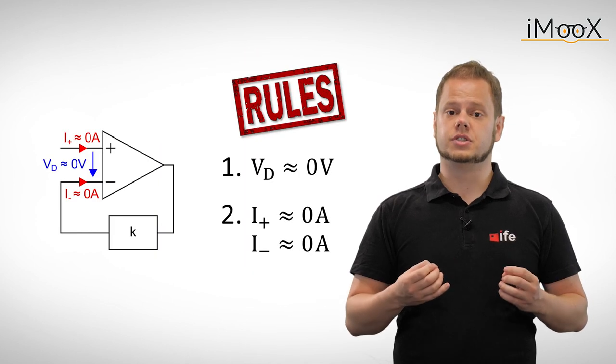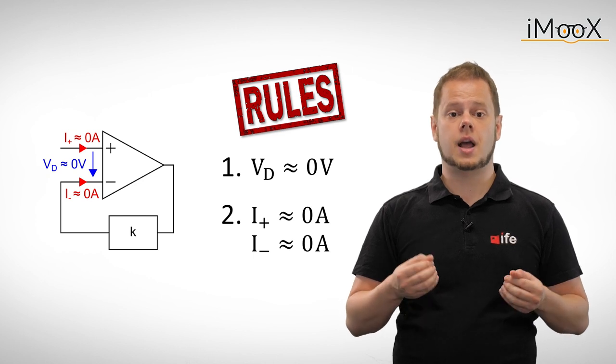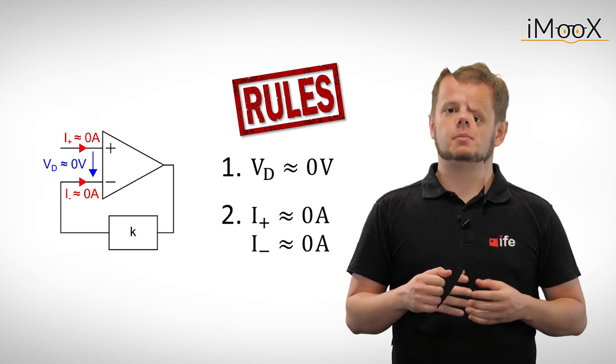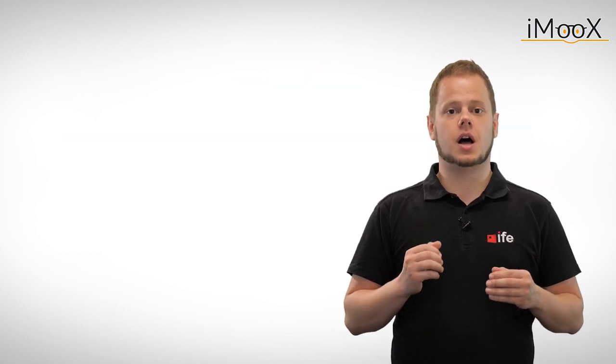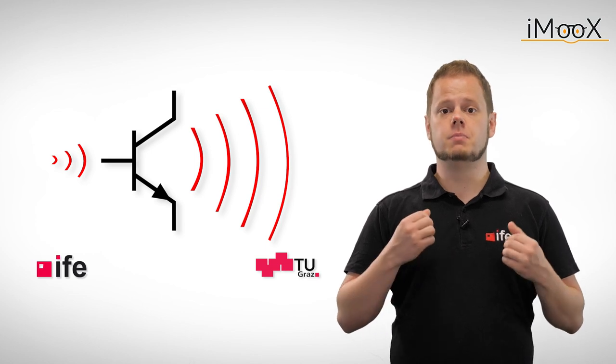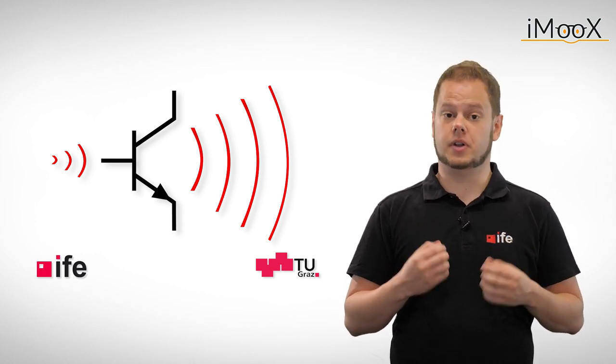This means the amplifier has a gain G equals 1 plus R1 over R2. By applying the two rules, any circuit involving an operational amplifier with negative feedback can be solved easily. By using components other than resistors in the circuit, more complex operations can be implemented than just a simple amplification.